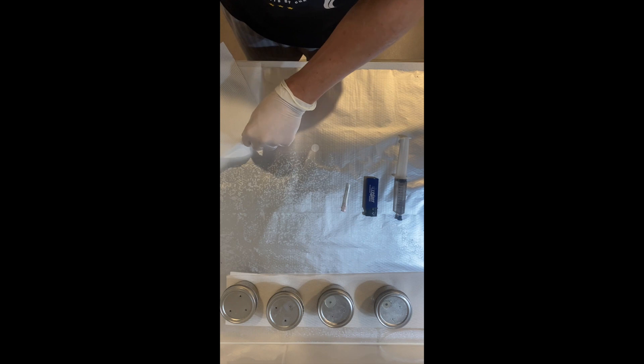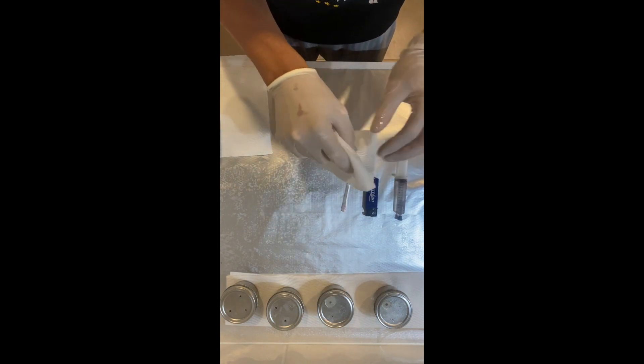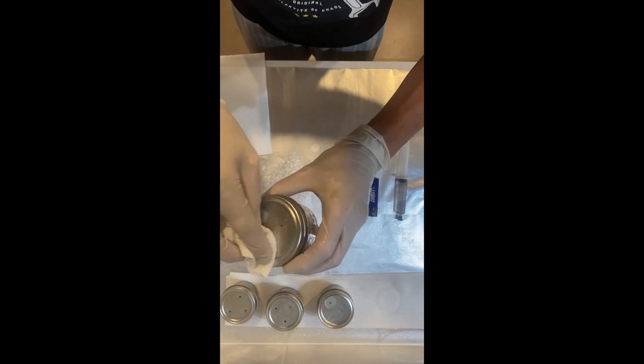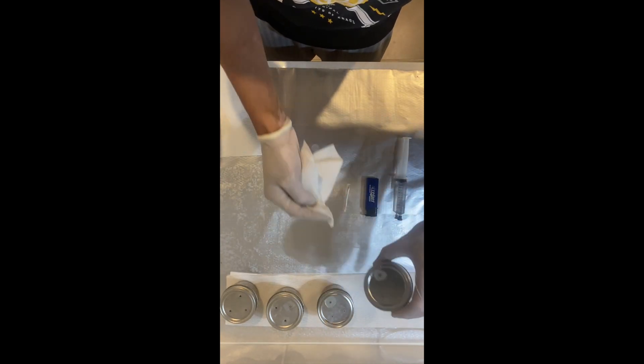Now we are ready to get another paper towel, give them a light squirt with our alcohol again, just going to lightly wipe down where we're going to be injecting, so just over those holes.